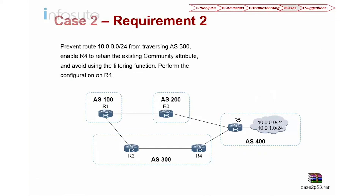On the second scenario, the requirement is to prevent the route 10.0.0.0/24 from transiting AS300. Enable R4 to retain the existing community attribute — R4 already received community 400:1 and must retain this. Avoid using filtering functions; perform the configuration on router 4. We have 400:1 here, so we will advertise to R2 with no-export. When R2 receives it, it will not send to R1. We use a community list to do this.